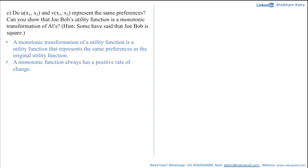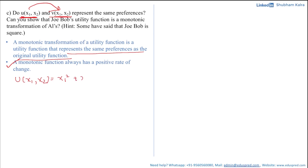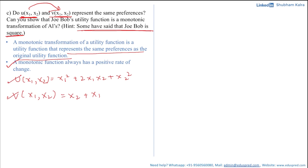Coming back to the question: a monotonic transformation of a utility function represents the same preferences as the original. If we can show that u(x1, x2) is a monotonic transformation of v(x1, x2), then yes, they represent the same preferences. We have u(x1, x2) = x1² + 2x1x2 + x2² and v(x1, x2) = x1 + x2. Note that u looks like a perfect square — Joe Bob's utility is the square of Al's.